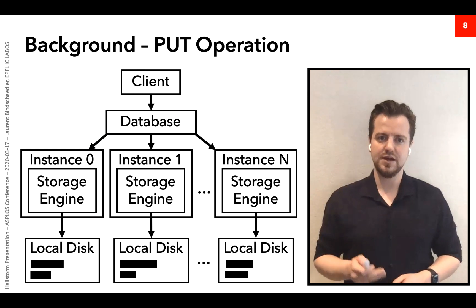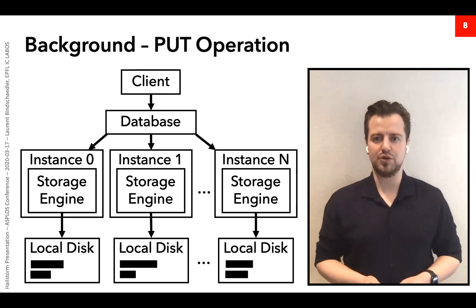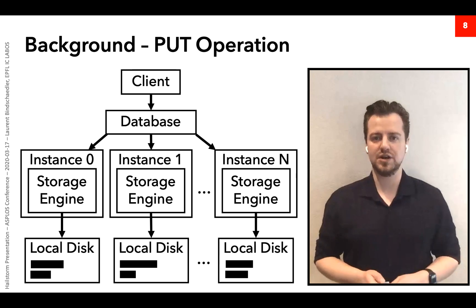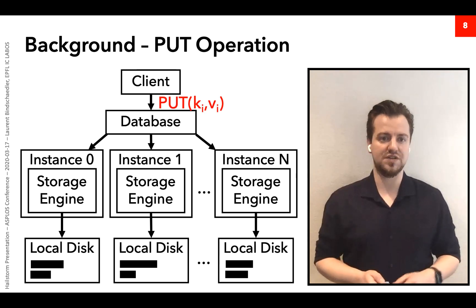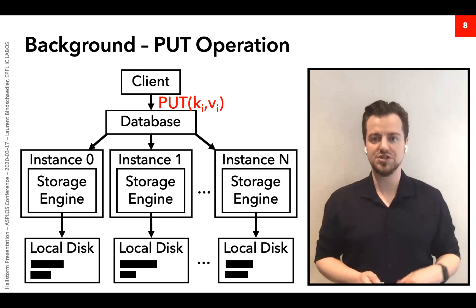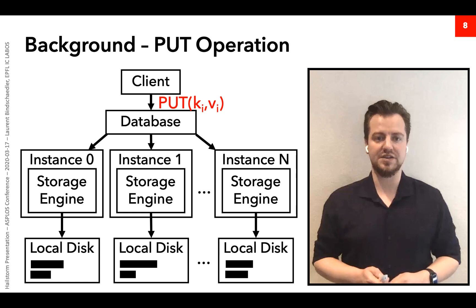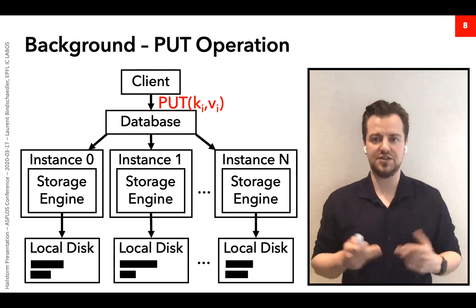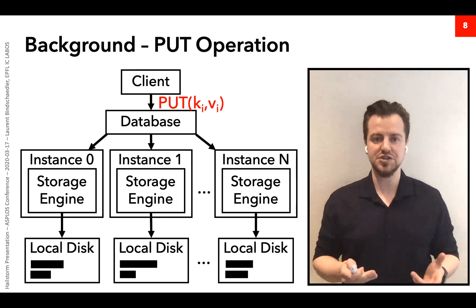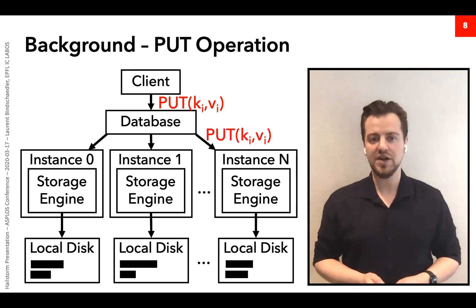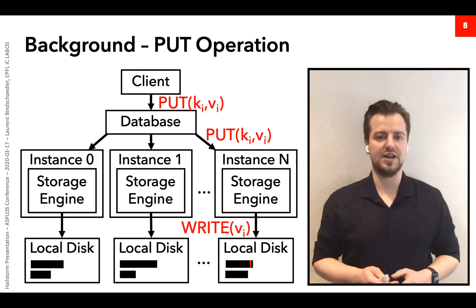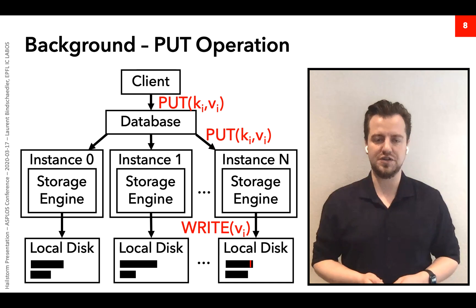The second operation is a write, or put. The client sends the database a key-value pair — ki, vi — that it wants to store. The database contacts the instance responsible for the associated partition, sends it the request, and that instance uses the storage engine to write the value at the appropriate location on disk.